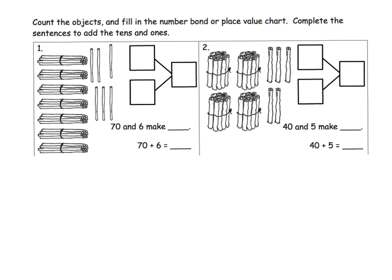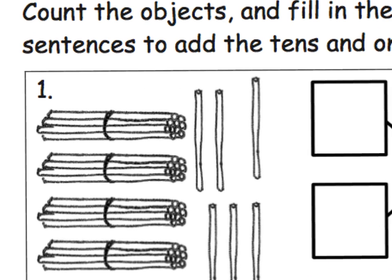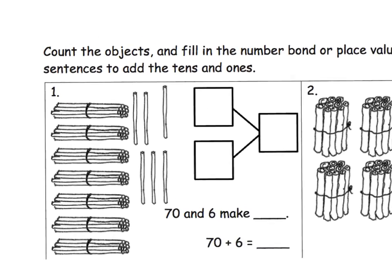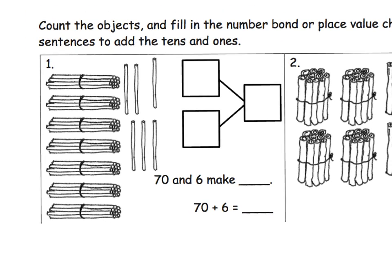We really want our students to understand this convention — it's like a promise that we are making to our students that whenever they see a bunch, a bundle, that's always going to be 10. Some students might be resistant to just buying into that convention, so parents and teachers, if students really need it, let them count and verify that this really is a bundle of 10: 1, 2, 3, 4, 5, 6, 7, 8, 9, 10. Ultimately, we want our students to buy into the convention. It's okay to buy into a convention — that's a promise we're making our students. I'm not asking them to blindly follow some sort of math algorithm; it's a convention that we're asking.